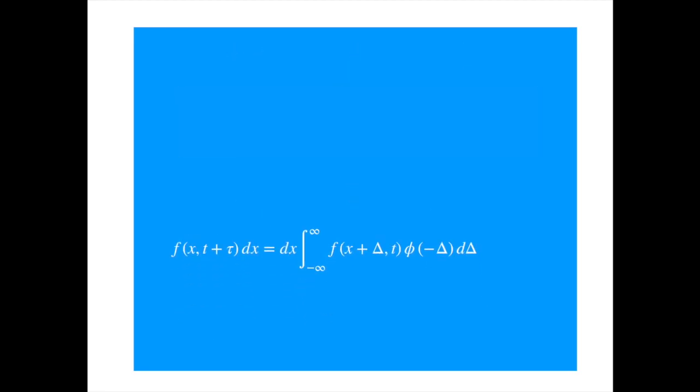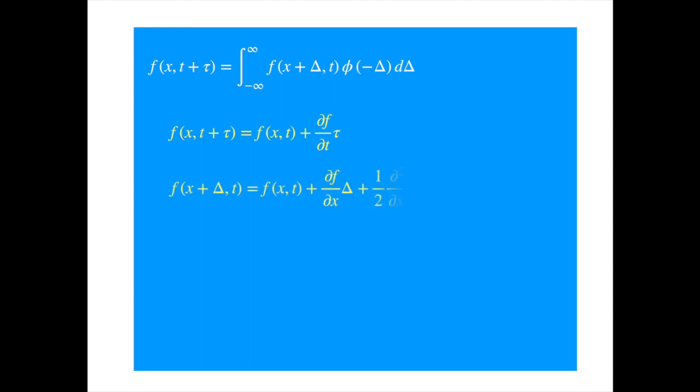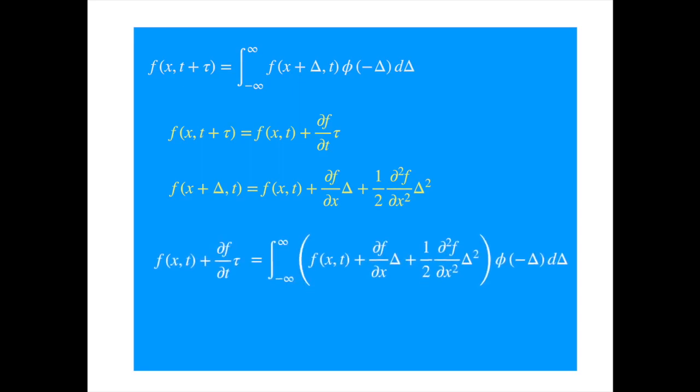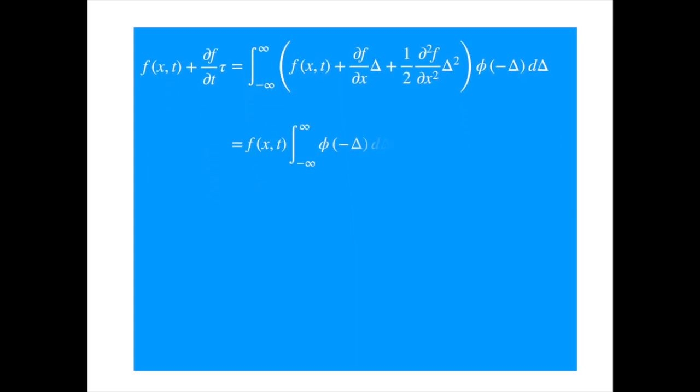Next the familiar steps. We get rid of dx on both sides. Then expand the left hand side to first order in t, and the right hand side to second order in x. Now we substitute these expansions into the expression. Then apply the integral to the individual terms. The values of f and its derivatives were evaluated at x, so they don't depend on delta and that's why we can take them out of the integral.